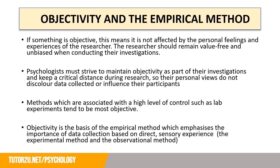The final key feature of science is objectivity and the empirical method. If something is objective, it is not affected by the personal feelings and experiences of the researcher — if it were, it would be subjective. The researcher should remain value-free and unbiased, maintaining a critical distance during research so that their personal views do not discolour data collected or influence participants' views or behaviour. Methods associated with a high level of control, such as lab experiments, tend to be most objective. Objectivity is the basis of the empirical method, which emphasizes data collection based on direct sensory experience; the experimental and observational methods support the empirical method most strongly.